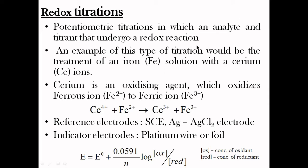Redox titration is a potentiometric titration in which an analyte and titrant undergo a redox reaction. For example, in this type of titration, a titrant treatment of iron solution with a cerium ion — cerium 4-plus ion reacts with ferrous ion. It is converted to cerium 3-plus ion and Fe³⁺. That is, cerium undergoes a redox reaction. If Fe²⁺ changes to Fe³⁺, this type of titration is known as redox titration.